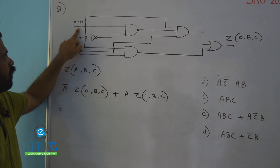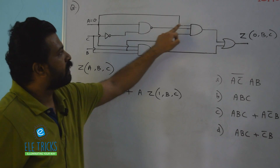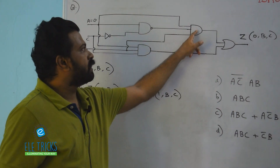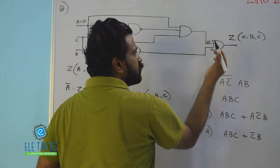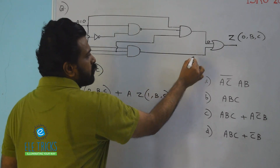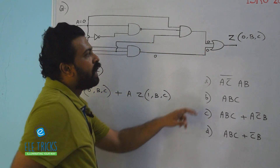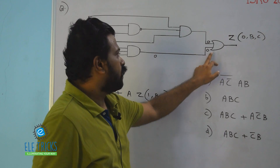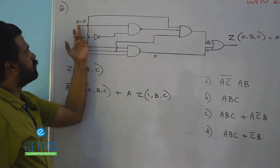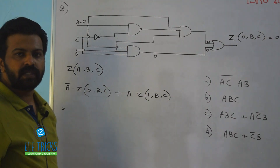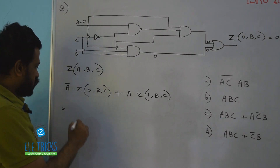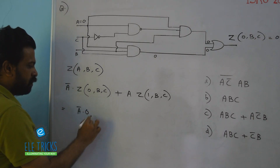Since A is equal to 0 and A is connected to an AND gate here, and also to another AND gate here, one input of each AND gate is 0, so immediately the output of both AND gates is 0. Now we have an OR gate with both inputs equal to 0, so the output is also 0. Therefore Z(0, b, c) = 0, and the term A-bar AND 0 is simply 0.